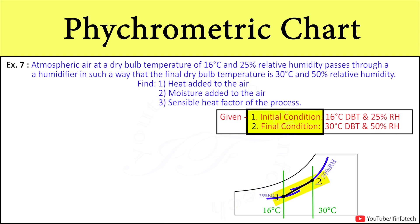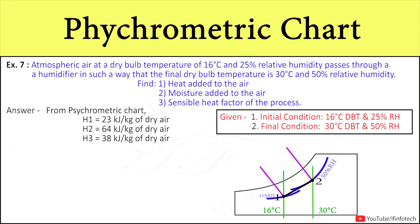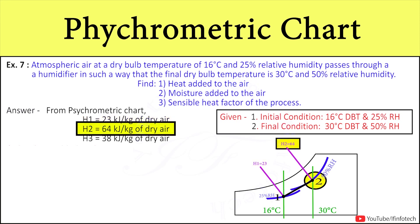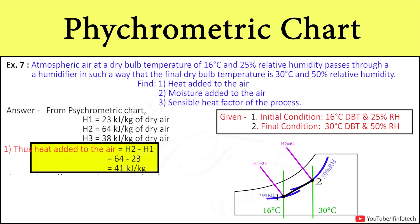First we have to find out heat added to the air. For that we need to calculate the change in enthalpy. From the psychrometric chart, the enthalpy at point 1 is 23 kJ per kg of dry air, and at point 2 the enthalpy is 64 kJ per kg of dry air. Putting these values in, we get heat added to the air as 41 kJ per kg.